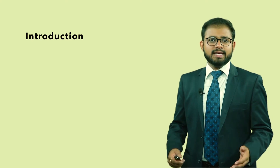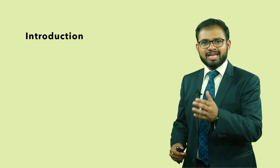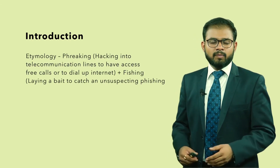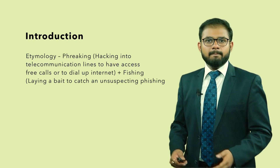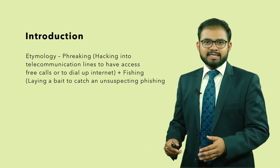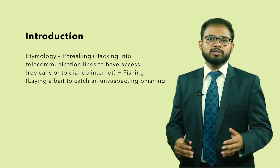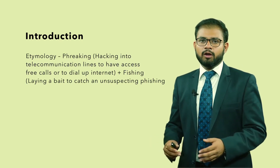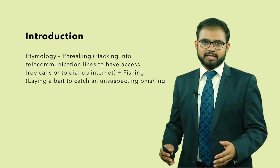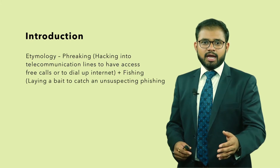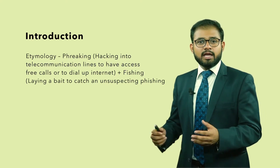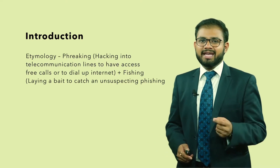You might be thinking how did the word phishing, spelled P-H-I-S-H-I-N-G, come about. The etymology of the word phishing is American and it is made up of two words: phreaking plus fishing. Phreaking, spelled P-H-R-E-A-K-I-N-G, is the act of hacking into telephone lines to have access to free calls or dial-up internet, when telephone calls were very expensive. And fishing, as you may be aware, is the concept of laying a bait to catch an unsuspecting victim.